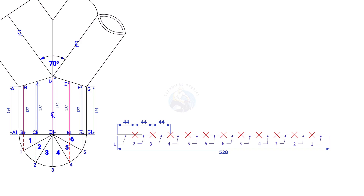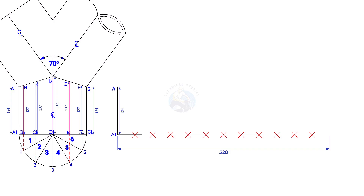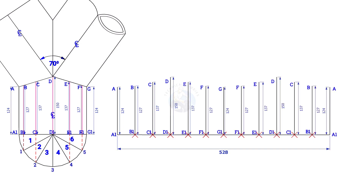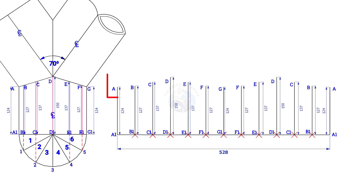Draw a perpendicular line on the starting of this line; the length shall be 124mm. Similarly, draw lines B, B1, C, C1, etc. Draw a smooth curve starting from A to A.